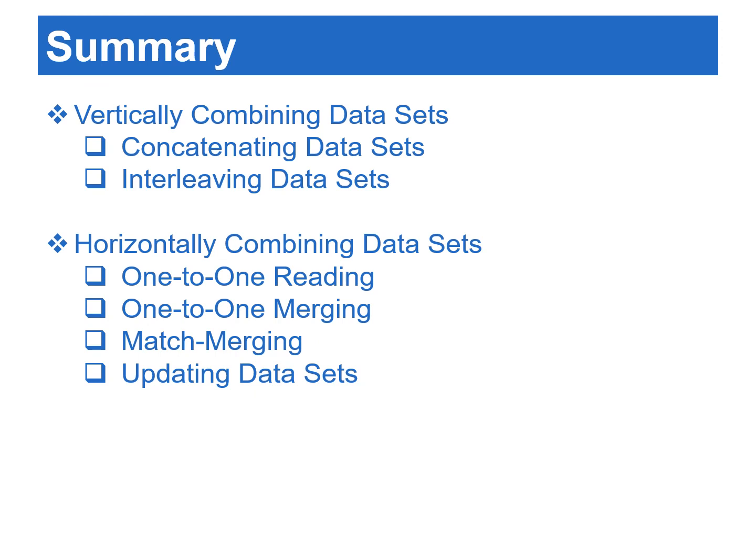Now let's review what we've learned from this video. We learned how to combine data either vertically or horizontally. When observations of data are collected from different sources, we need to combine them vertically, including concatenating data and interleaving data. When data variables are collected from different sources, we need to combine them horizontally. Depending on the situation, we can combine data horizontally by using one-to-one reading, one-to-one merging, match merging, and updating. I hope you enjoyed this video. Please subscribe to my channel and click the bell icon to get new video updates.